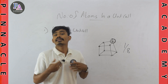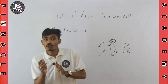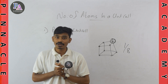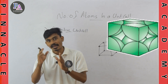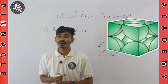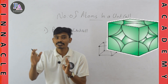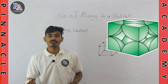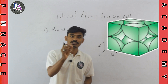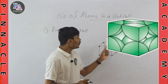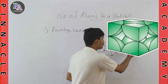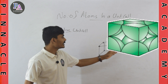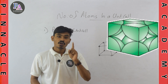So we have to calculate it. The number of corners is 8. We take 8 corners, each contributing 1/8. So that is 8 × 1/8. In a cube, each corner atom contributes 1/8 to one unit cell. So 8 × 1/8 gives us 1 atom. The total number of atoms is 1 atom. That is why we call this the primitive unit cell.